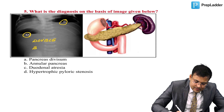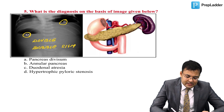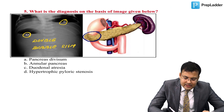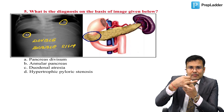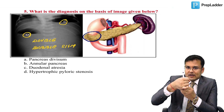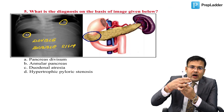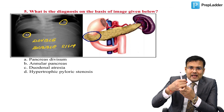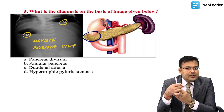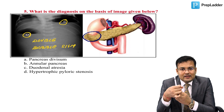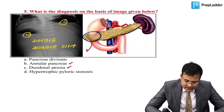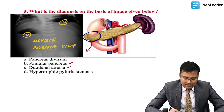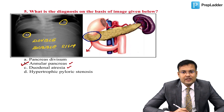The double bubble sign is seen in annular pancreas as well as duodenal atresia. In annular pancreas, there is a ring or annulus of ventral pancreas around the second part of duodenum, compressing it. Double bubble sign is seen in both annular pancreas and duodenal atresia, but this picture suggests annular pancreas. The correct answer is annular pancreas.